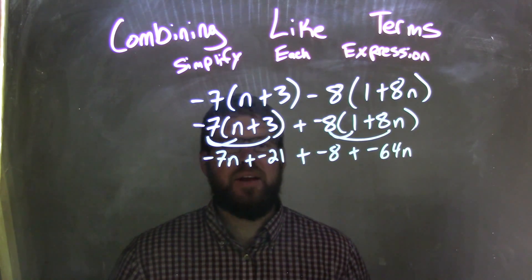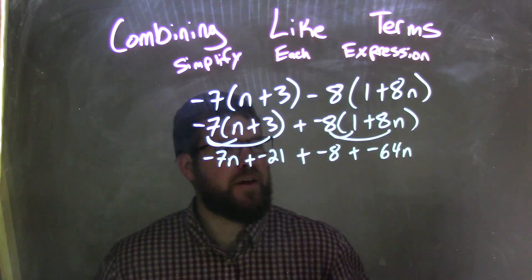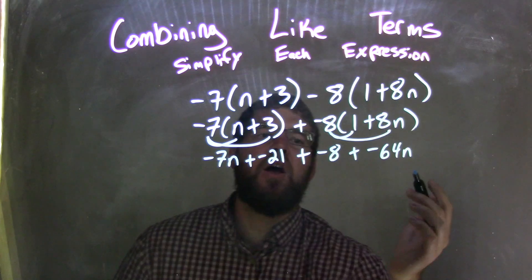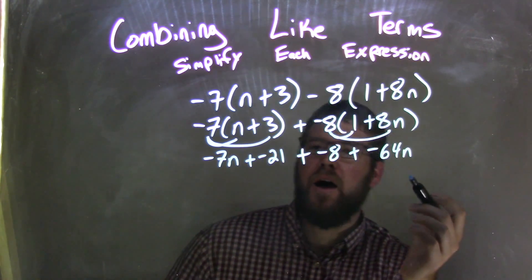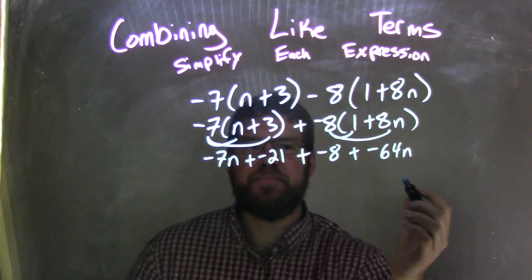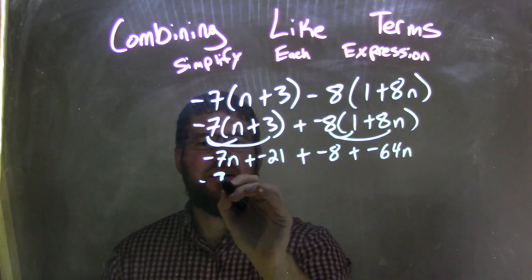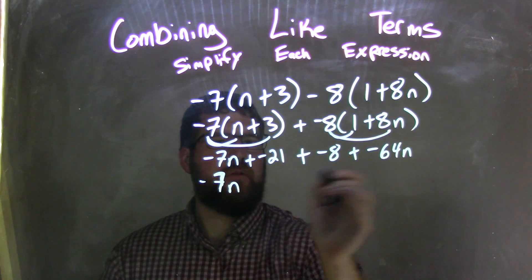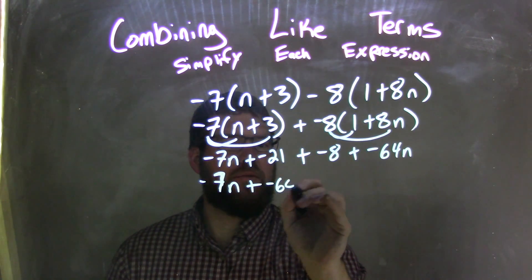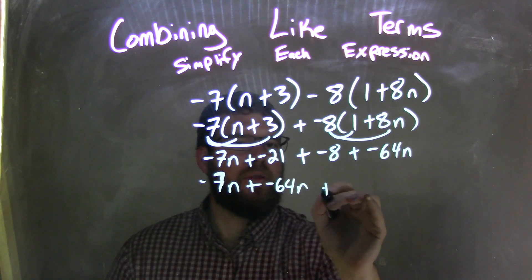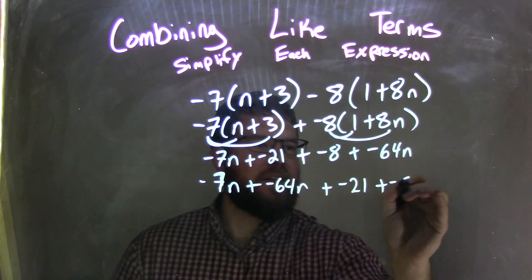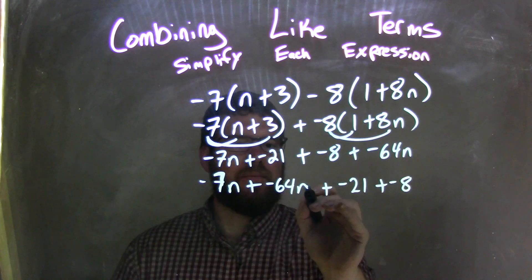Now I have negative 7n plus negative 21 plus negative 8 plus negative 64n. Let's rearrange and put our like terms first: negative 7n plus negative 64n, plus negative 21 plus negative 8. A lot of negatives in here.